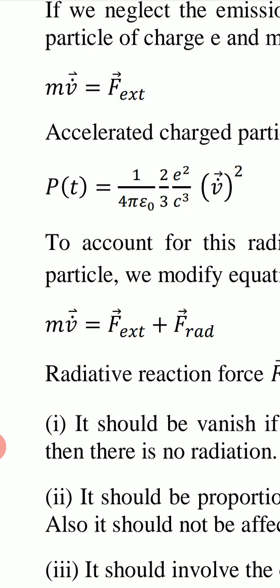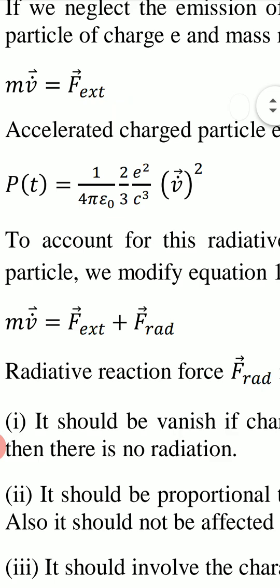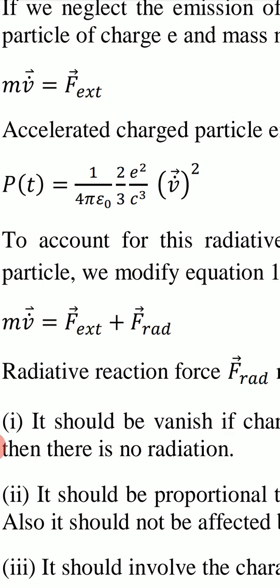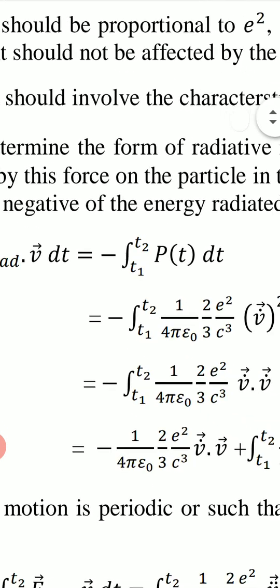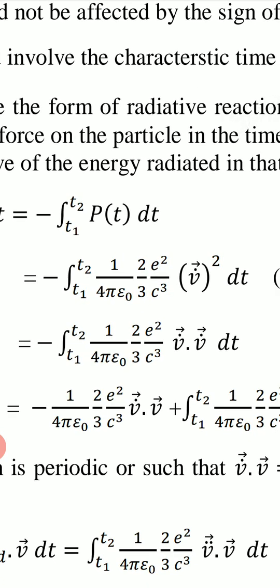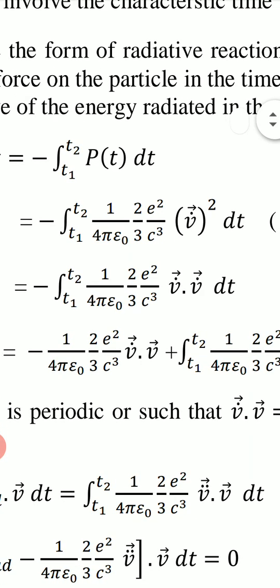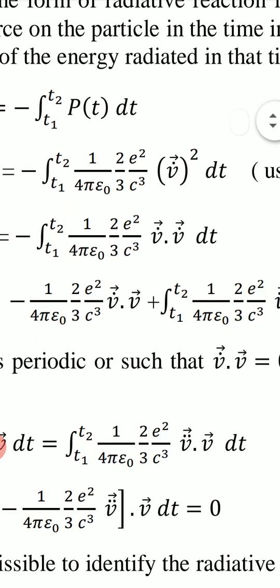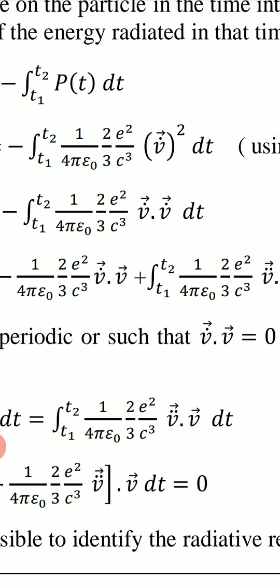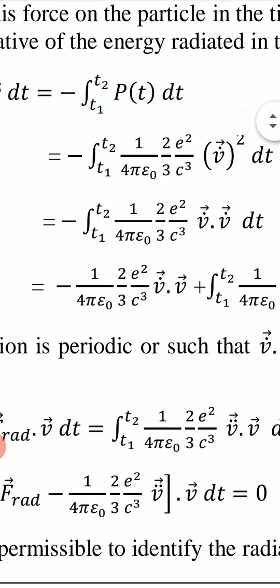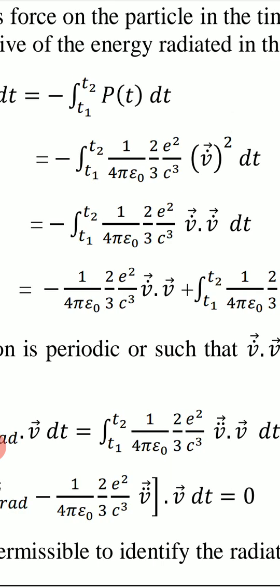Substituting the Larmor formula P(t) = (1/4πε₀)(2/3)(e²/c³) v-dot² into the right-hand side, we have: −∫(t1 to t2)(1/4πε₀)(2/3)(e²/c³) v-dot² dt. We write v-dot² as v-dot · v-dot (dot product of vectors) and proceed to integrate by parts, taking one v-dot as the first function and the other as the second function.